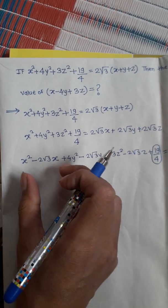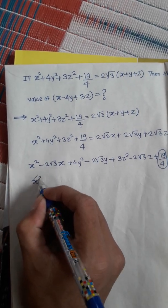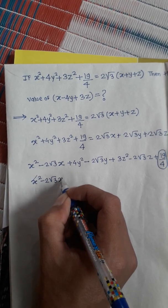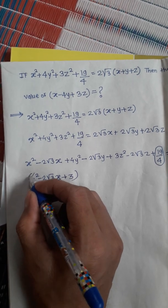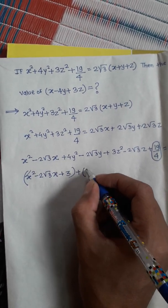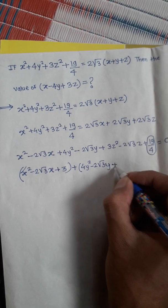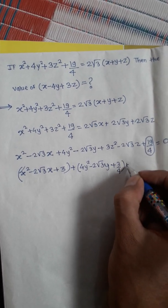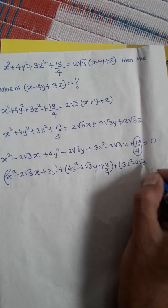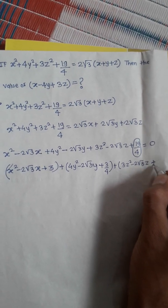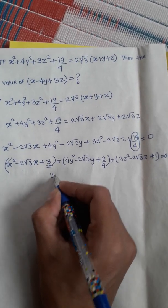We split 19/4 as: x² - 2√3·x + 3, plus 4y² - 2√3·y + 3/4, plus 3z² - 2√3·z + 1 = 0.